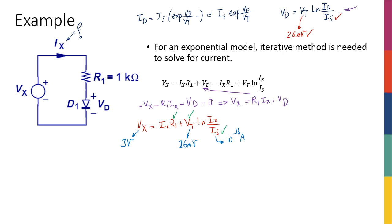But is it easy to solve? Is it something that you can solve without using a programming calculator or MATLAB or something like that? Remember we have a nonlinear equation here that you need to use iterative method to solve it. Because we know that basically this equation becomes 3 is equal to R1 is 1000, so 1000 ix plus 0.026 ln of ix over 10 to the negative 16.